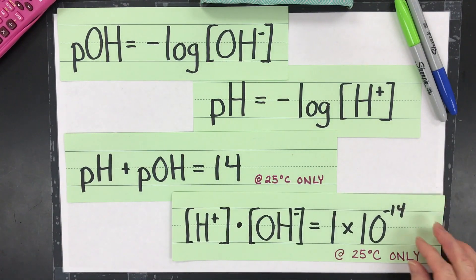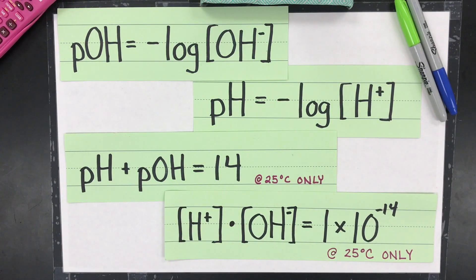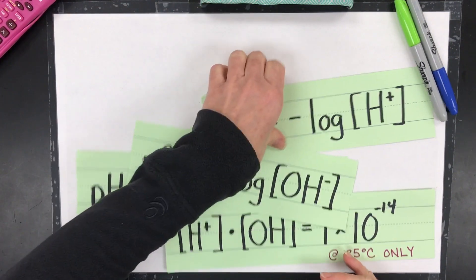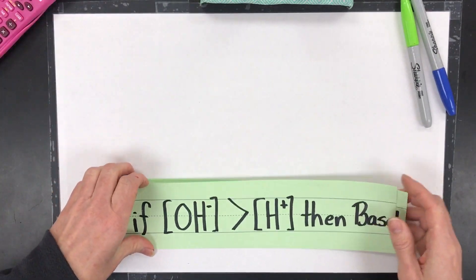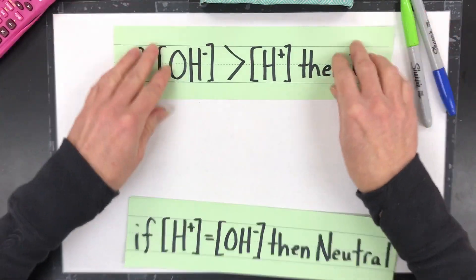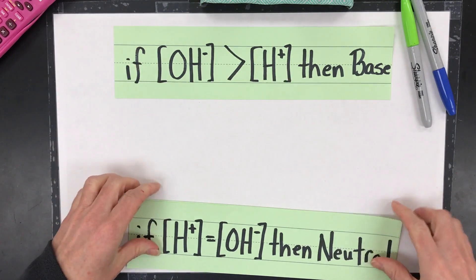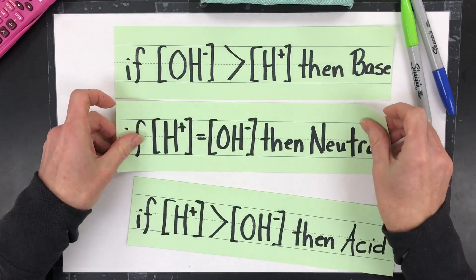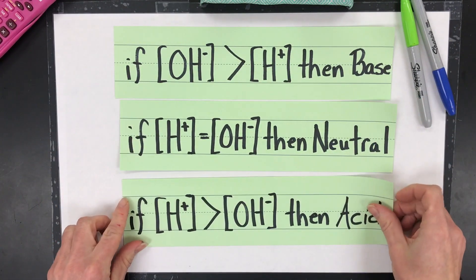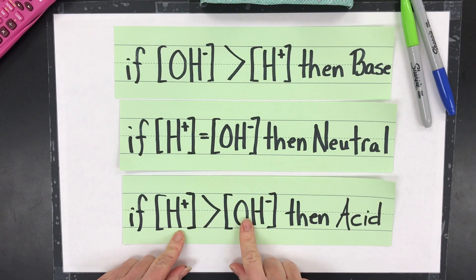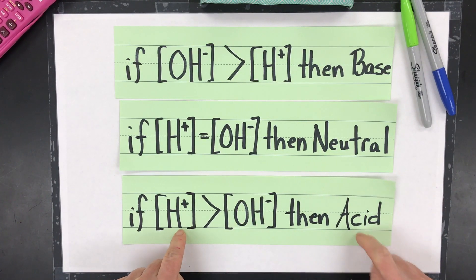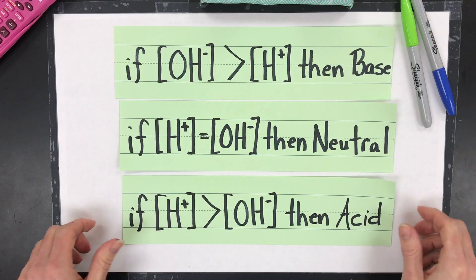And then I have three facts that you're going to want to know to classify as a basic solution, or acidic, or neutral. If you have something that's basic, it means the hydroxide is greater than the hydrogen ion concentration. If they were equal, you'd call it neutral, and if the hydrogen ion concentration was greater than the hydroxide, it would be an acid. These work at any temperature.